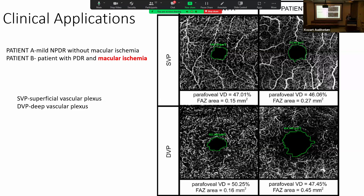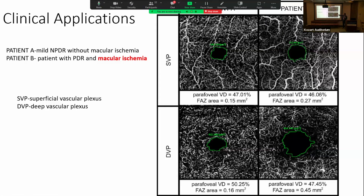Let's talk about the first application. Say you have a patient in clinic with PDR, no macular edema, clear media, and you're not sure why the vision is down. Here you've got two patients — one with moderate NPDR on the left without significant macular ischemia, though they do have a fairly irregular FAZ. If you look on the right, both for the superficial and the deep capillary plexus, there is an increase in size and irregularity of the foveal avascular zone.